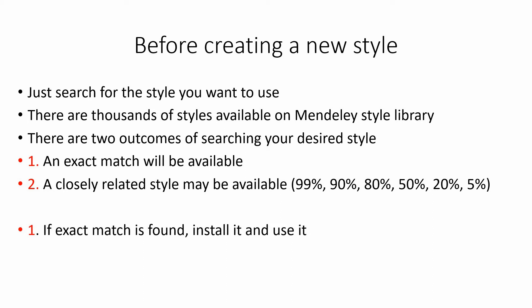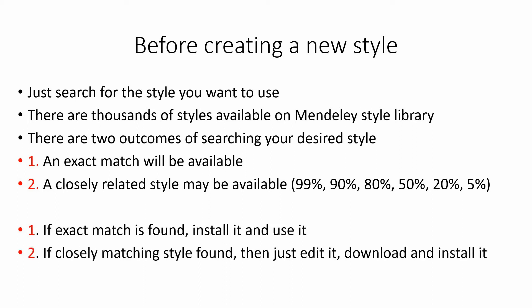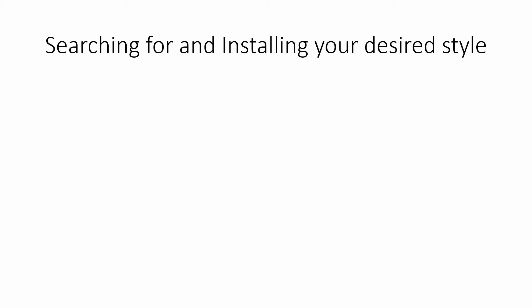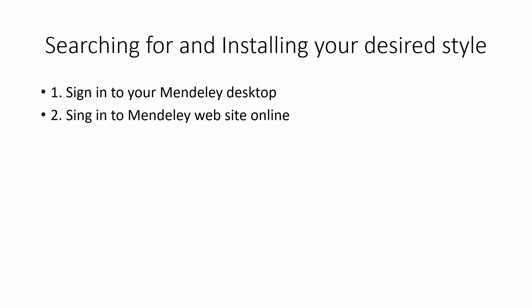If an exact match is available, install that and use it. And if a closely matching style is available, then just edit it, download and then start. Now let's search for your desired style and if available then let's install it. For this purpose you will have to sign in to your Mendeley desktop first, and then sign in to the Mendeley website online and search for your desired style.